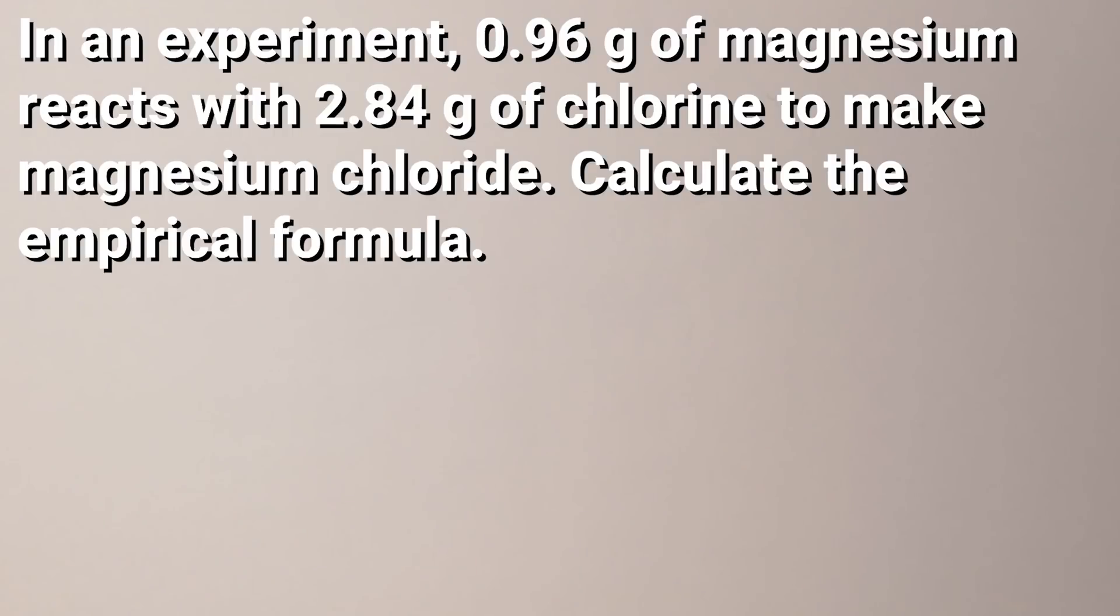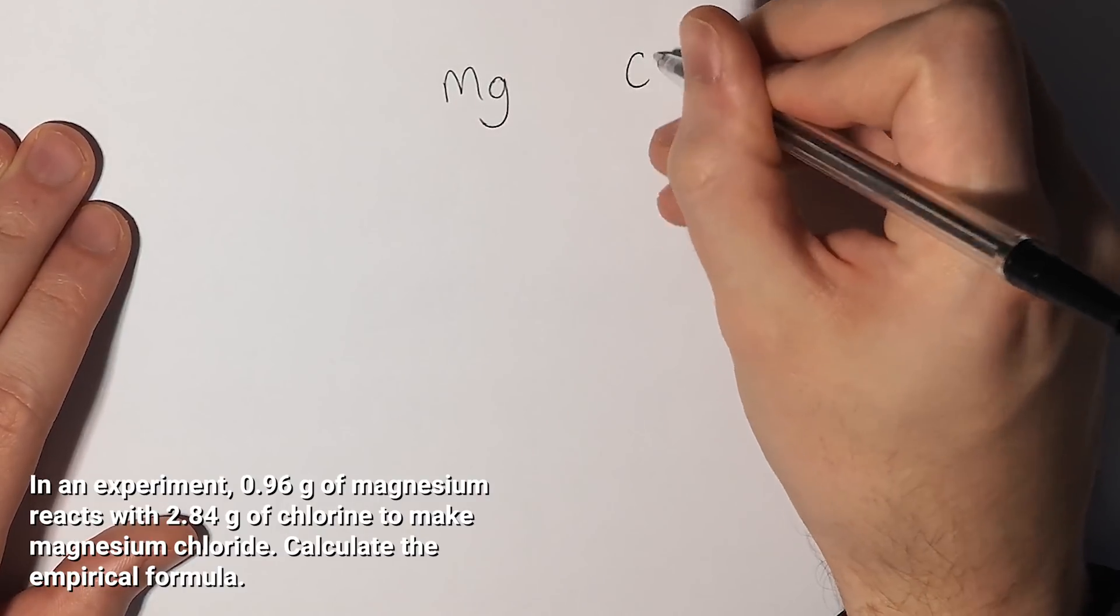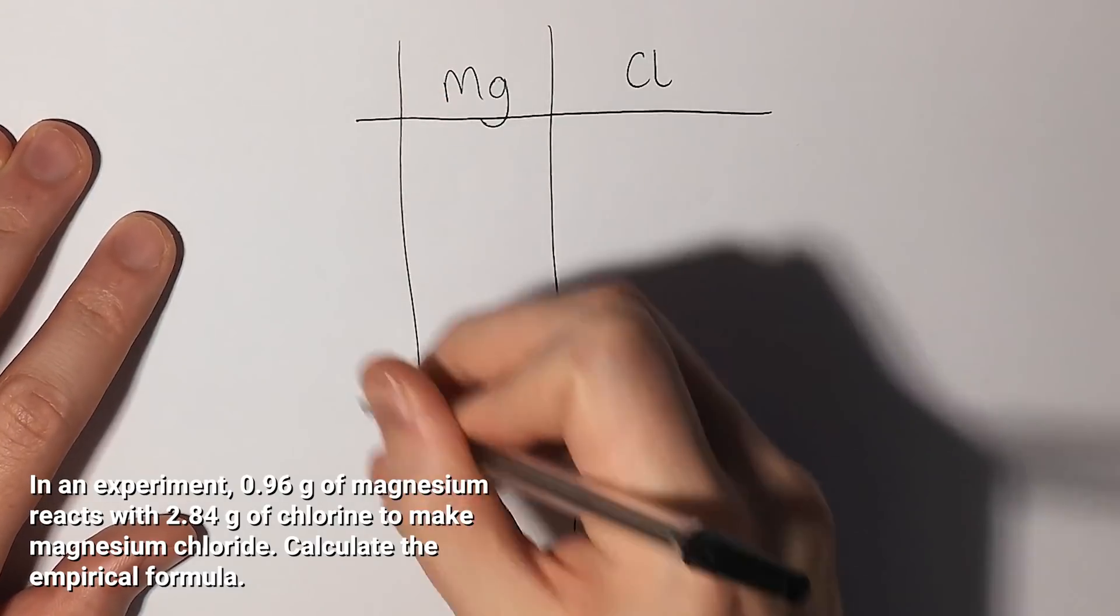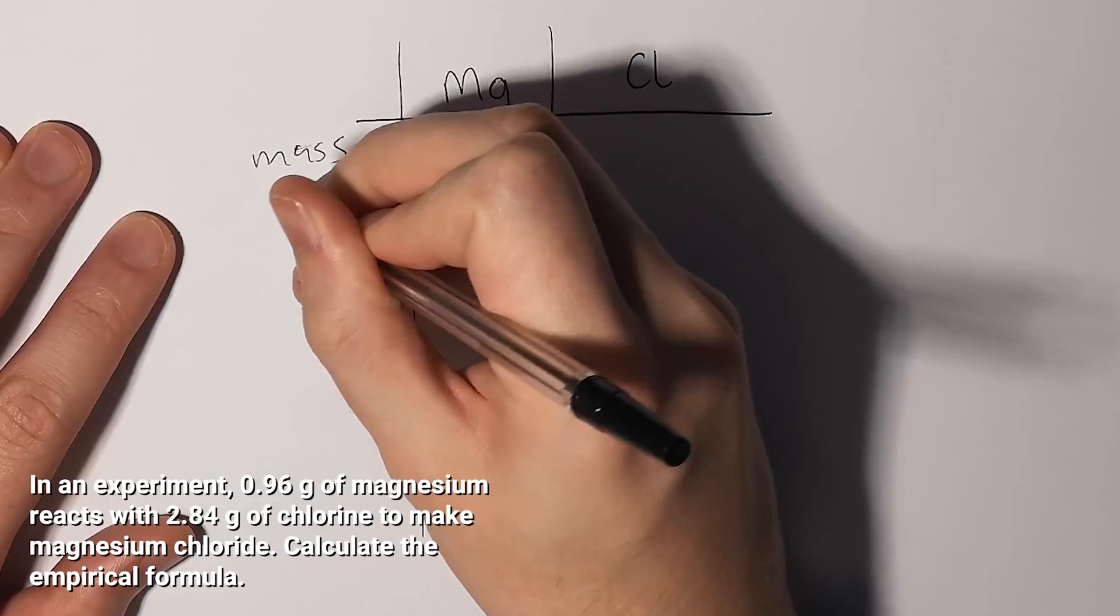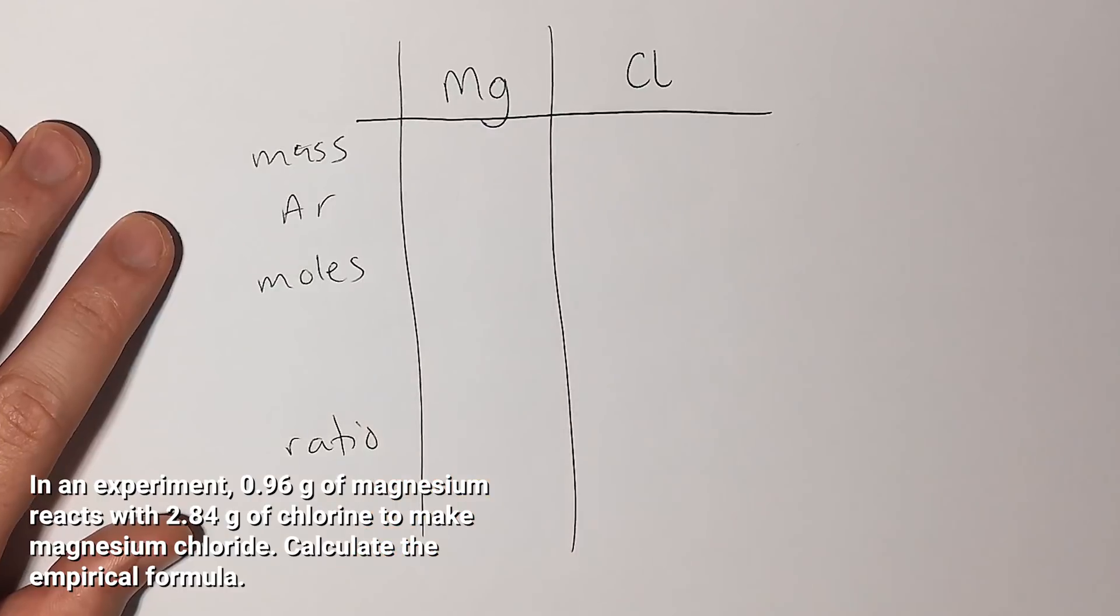In a different chemical reaction, I react 0.96 grams of magnesium with 2.84 grams of chlorine to make magnesium chloride and I'm trying to find the empirical formula of magnesium chloride. Again we start with a similar setup: I write the element names, draw my table with mass, AR, moles, and ratio.